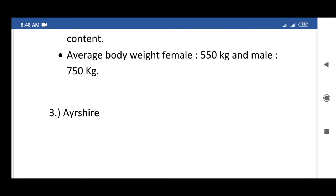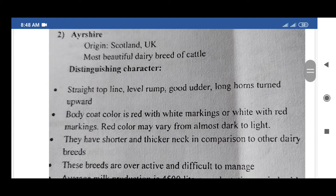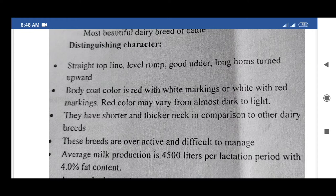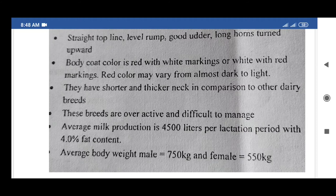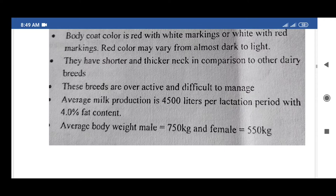The fourth exotic breed of cattle is Ayrshire, originating from Scotland, UK. It is considered the most beautiful dairy breed of cattle. Distinguishing characters: straight topline, level rump, good udder, long horns turned upward. Body coat color is red with white markings or white with red markings; red color may vary from almost dark to light. Neck is shorter and thicker compared to other dairy breeds.